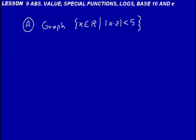For example, let's just think if we had this point, minus 3, comma, 0. If we wanted to graph that, it would be 3 to the left on the x-axis, right here. So that would be at minus 3, comma, 0.